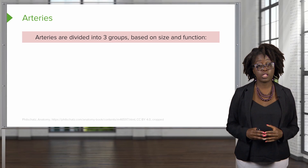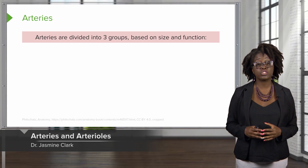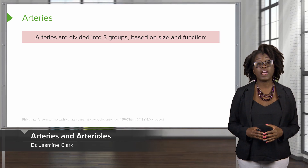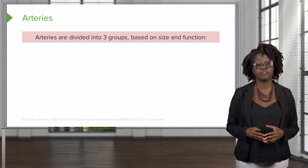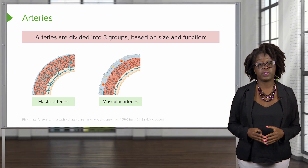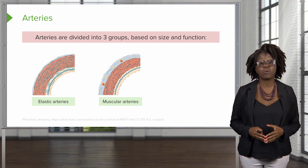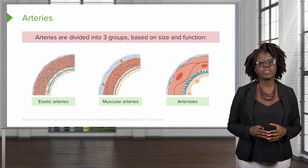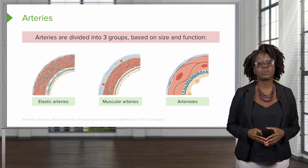If we take a closer look into the structure of our arteries, we find that they're divided into three different types. We have the elastic arteries, which are going to have a large amount of elastin in their walls, the muscular arteries, which are going to have a larger amount of smooth muscle in their walls, and then we have the smaller arterioles.